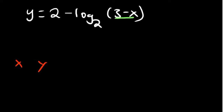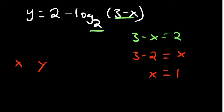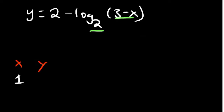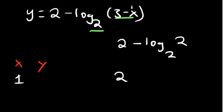In this case we have a base of 2. So 3 minus x — when is it going to equal 2? It's going to equal 2 when 3 minus x equals 2, meaning x equals 1. So when x equals 1, what do we have? We plug in x equals 1: we get 2 minus log₂(2). Since we have the same base and value, log₂(2) equals 1. So we have 2 minus 1, which gives us 1. So the point is (1, 1).